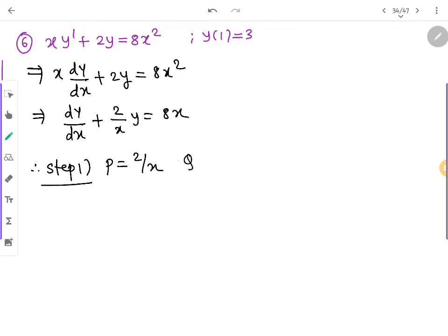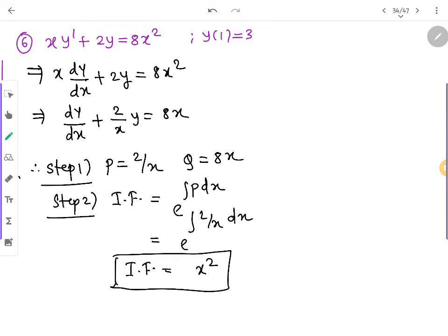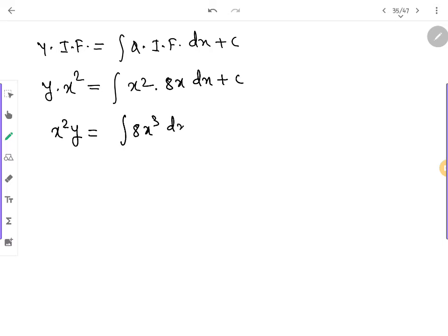So here step 1, P is equal to 2 upon x, Q is equal to 8x. Step 2, integrating factor is e raise to integration 2 upon x dx, which becomes x square. So y into x square is equal to x square times 8x dx plus c. So x square y is equal to 8x cube dx plus c. So x square y is equal to 2x raise to 4 plus c.